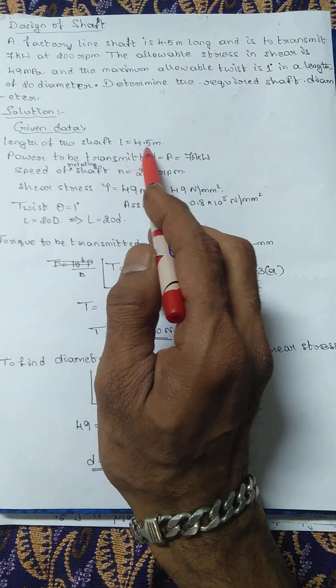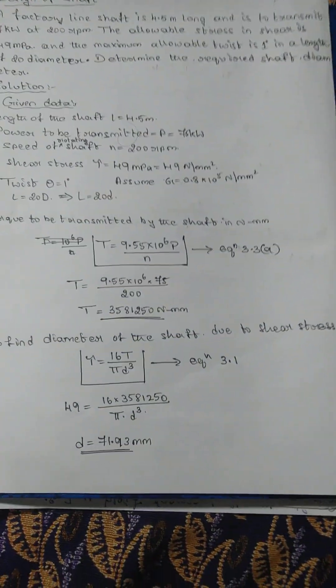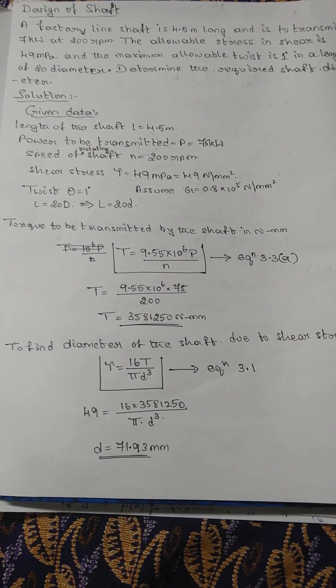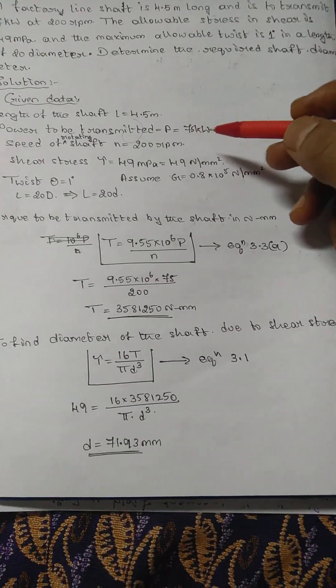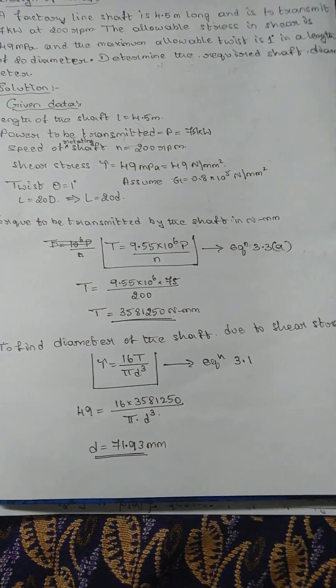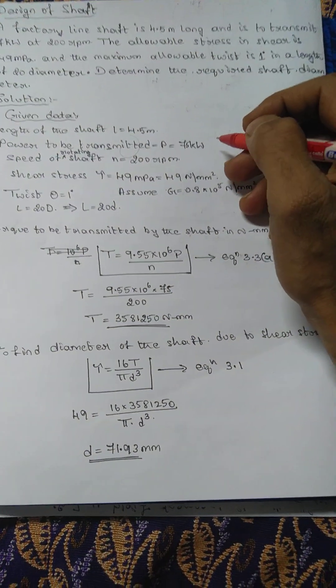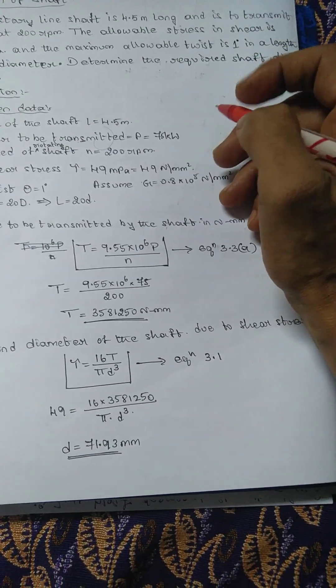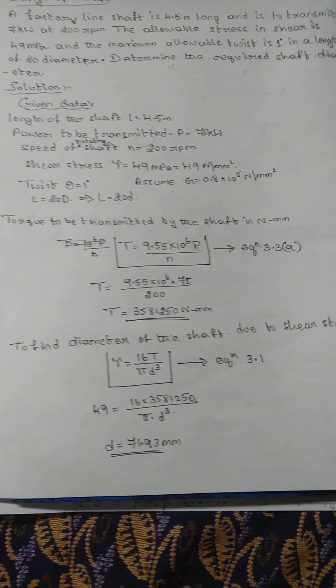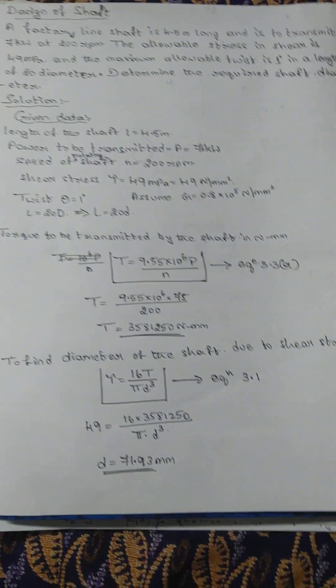The data given: length of the shaft is 4.5 meters, power to be transmitted is 75 kilowatts. I'm referring to Design Data Handbook by Mahadevan and Balvir Reddy, fourth edition.